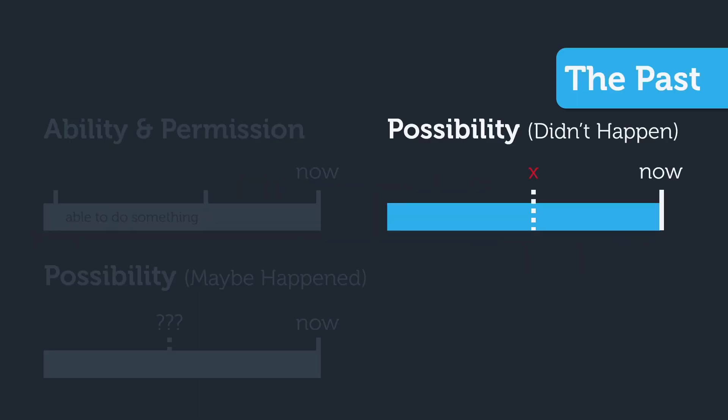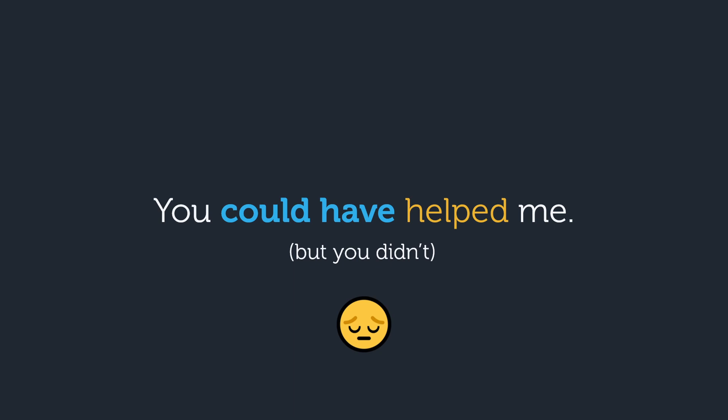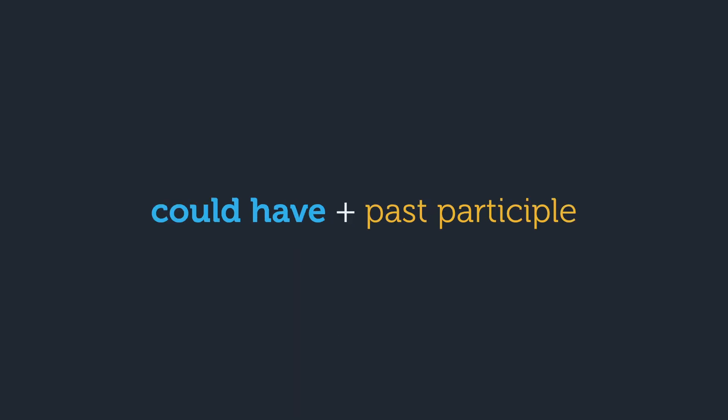This is another way to talk about possibilities in the past — specifically the possibility of something that did not happen. How would you say that somebody had the opportunity to help you but did not? You could have helped me, but you didn't. It's the same structure as before: simply say 'could have' plus a past participle — like come, went, sung, or visited — to talk about a possibility that did not happen. You'll usually be able to tell if it's a possibility that maybe happened or didn't happen based on the context.